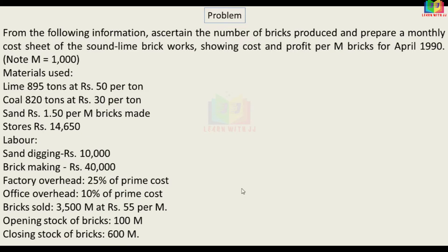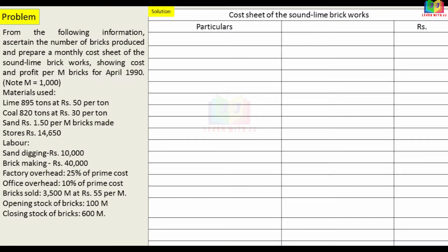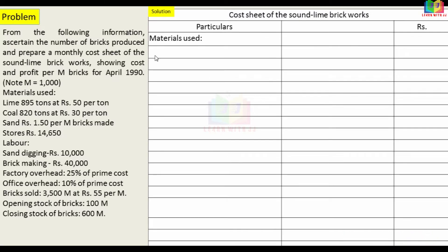Now let's calculate the number of bricks produced. We start with the materials — lime, coal, and sand. Stores are also used in making the bricks. We have opening stock, closing stock, and sold bricks, but the number of bricks made is not directly given. So we have to calculate it, and we can also calculate the sand cost from it.